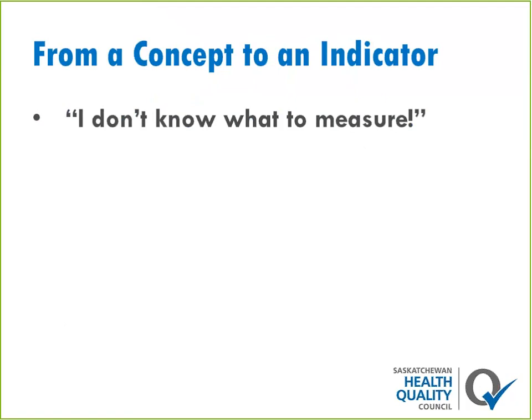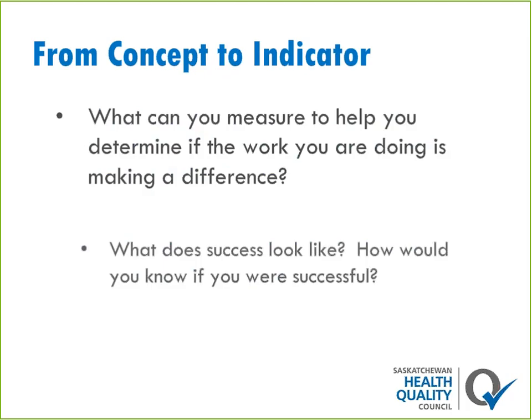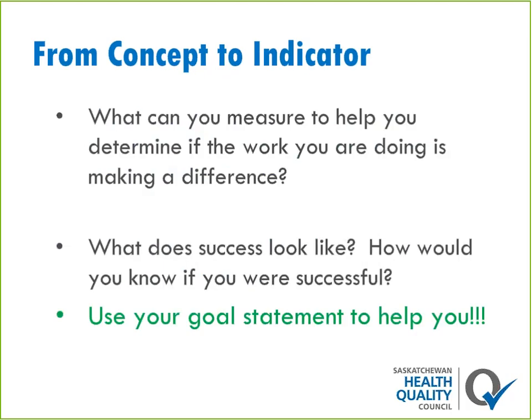Something pretty common to hear when people go to select measures is 'I just don't know what to measure.' Advice I've heard commonly: if you don't know what to measure, go back to that first step and dig deeper into the problem. Make sure you really understand the root cause to determine what processes might affect it. How do you go from knowing your problem and goal to determining what to measure? First, look at what your goal statement says — is there anything obvious that falls out of it? That's usually a pretty good place to start.